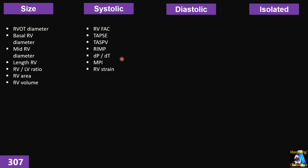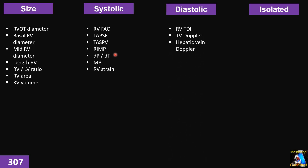For the systolic function of the right ventricle, we use FAC — fractional area change — TAPSE, S prime, RIMP, dP/dt, or the MPI index, and finally RV strain. Each of those has a different indication, implication, and meaning in different situations, which I am going to talk about each of them completely in detail and in practical form.